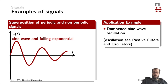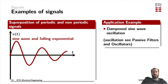You can put periodic and non-periodic signals together — superimpose them by adding them. The superposition of a sine wave and a falling exponential function can be seen in a damped sine wave oscillation, which we'll look at toward the end of this course when we examine passive filters and oscillators.